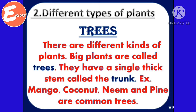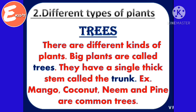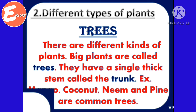Different types of plants. There are different kinds of plants. Big plants are called trees. They have a single thick stem called the trunk. For example, mango, coconut, neem and pine are common trees.